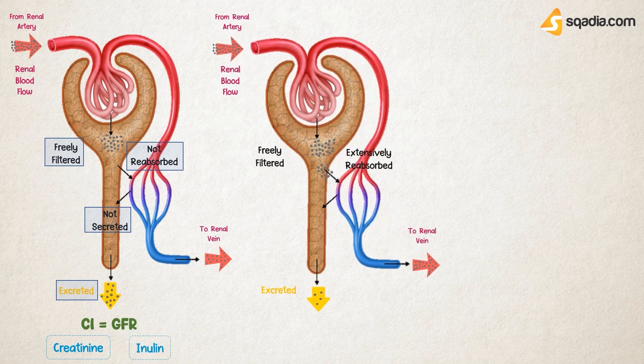Now imagine a scenario where a substance is freely filtered but is also subjected to extensive reabsorption, which means that the amount excreted is less compared to the amount that is filtered. An example of this is glucose, which is extensively reabsorbed in the proximal convoluted tubules, such that its renal clearance is very low — essentially zero.